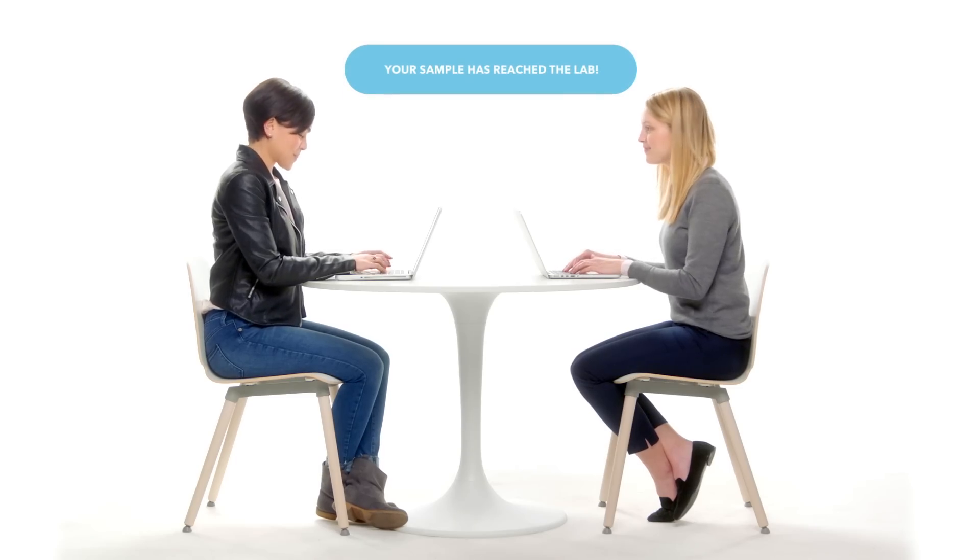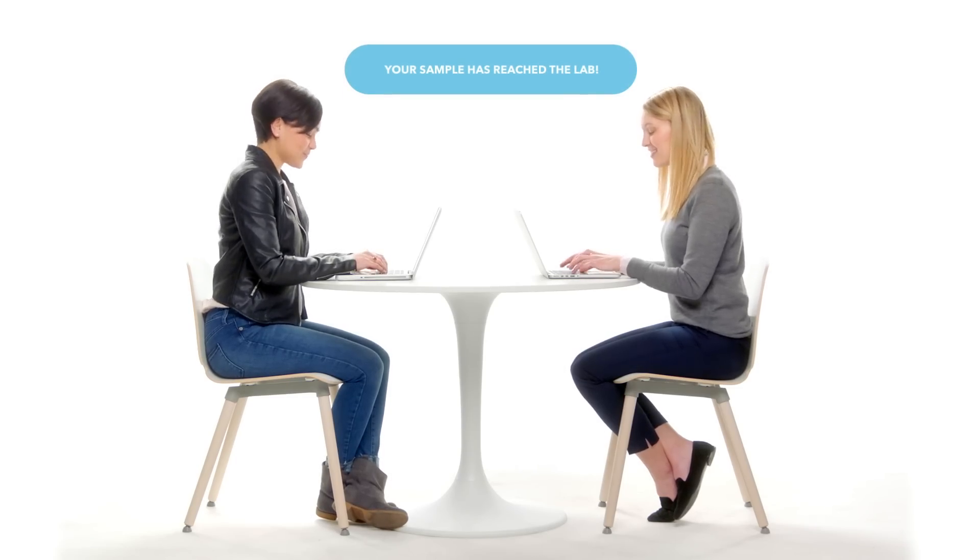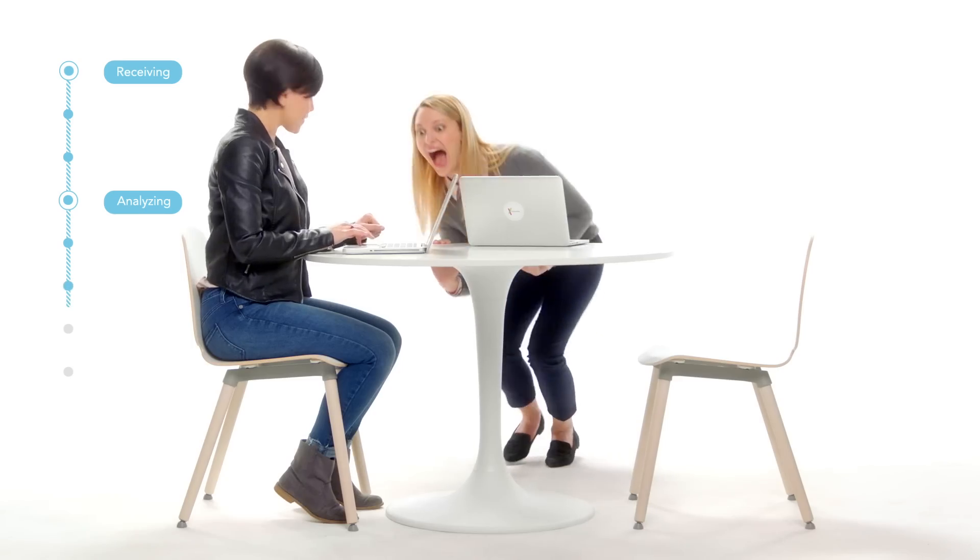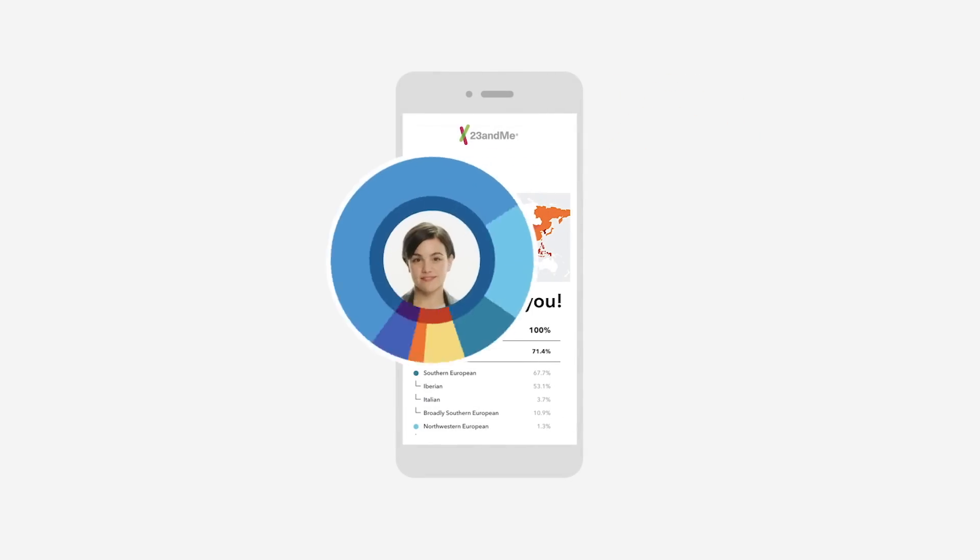You'll receive updates letting you know your sample is being processed. You'll be able to track your kit's journey to the lab through your private account. And then, about six to eight weeks later, you'll receive an email letting you know your reports are in, and your genetic journey is about to begin.